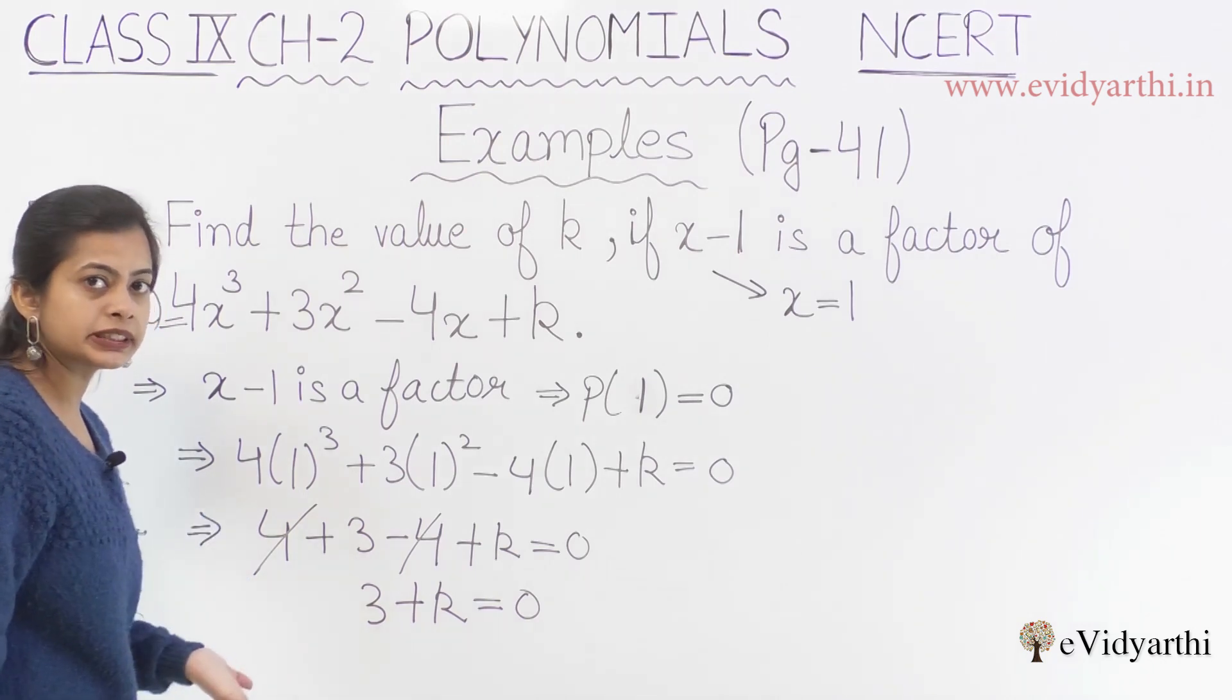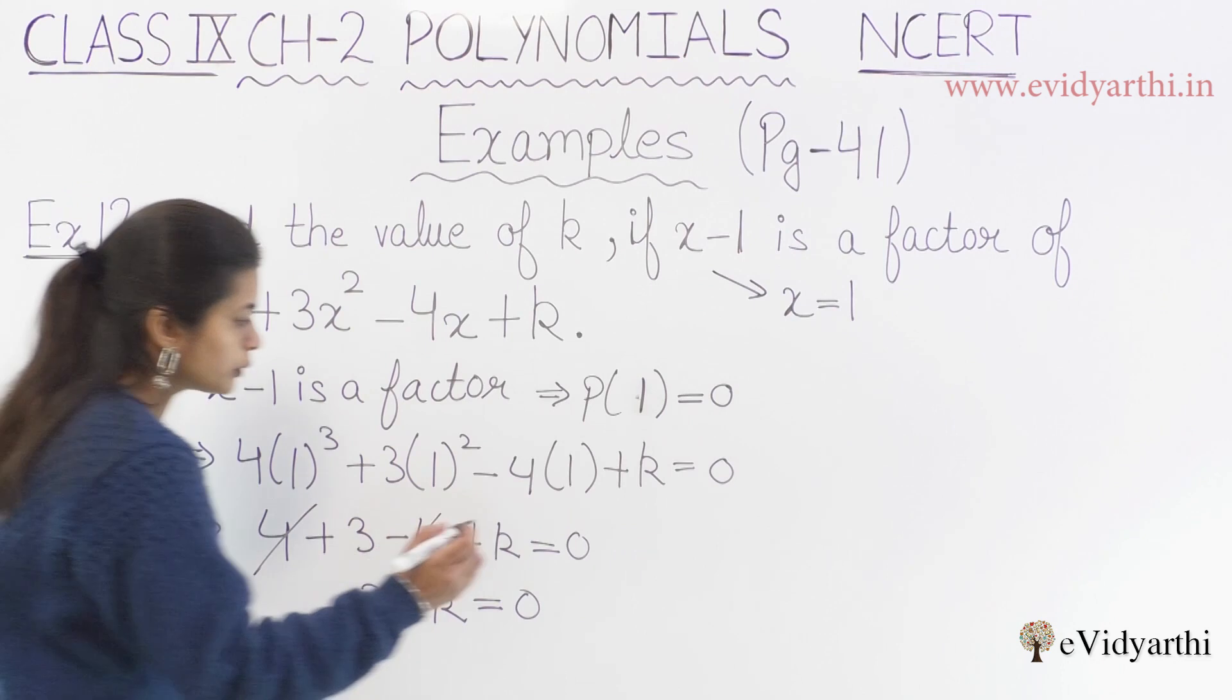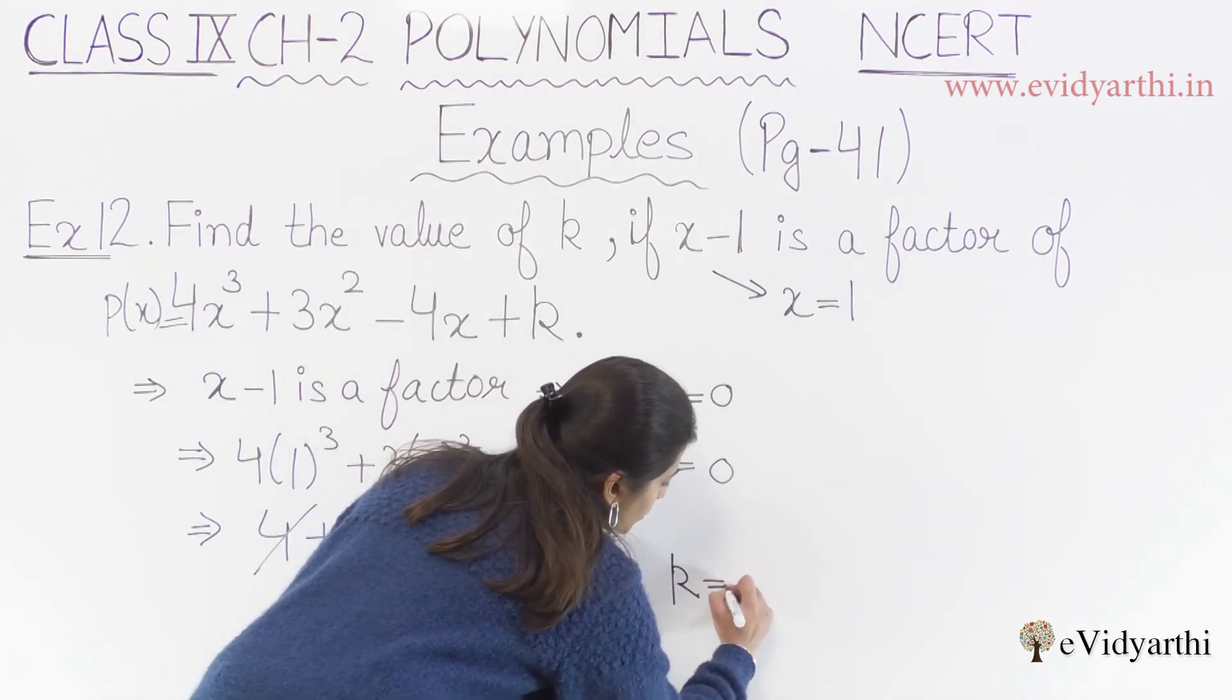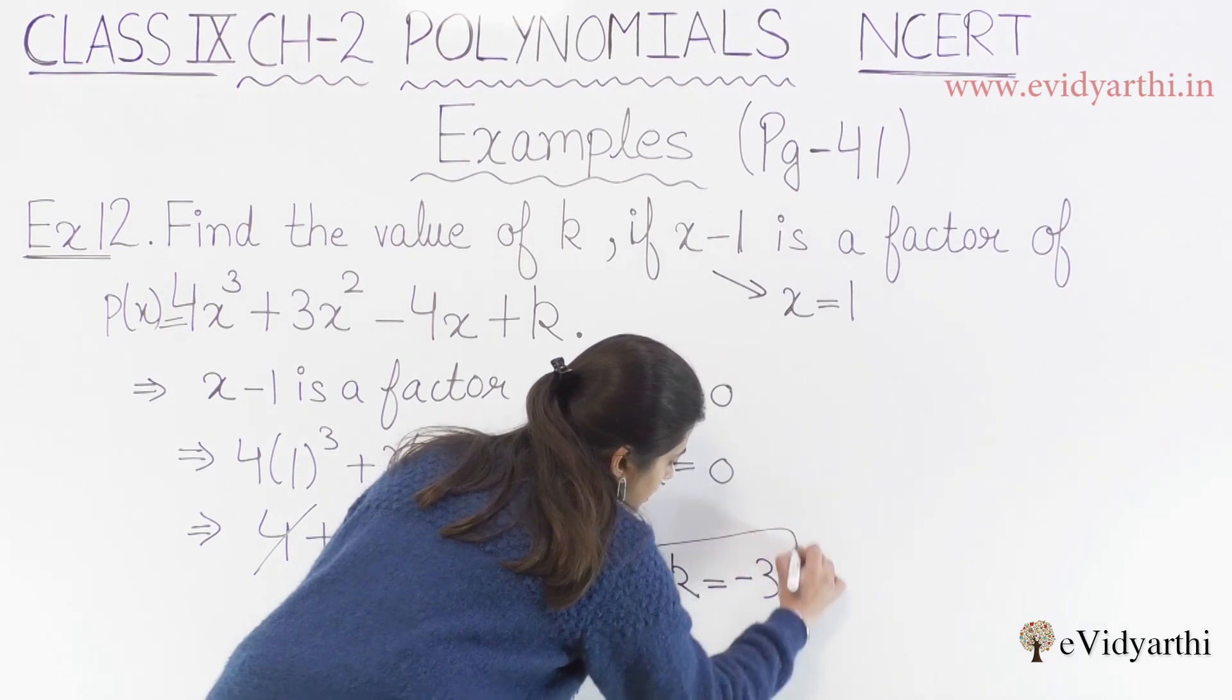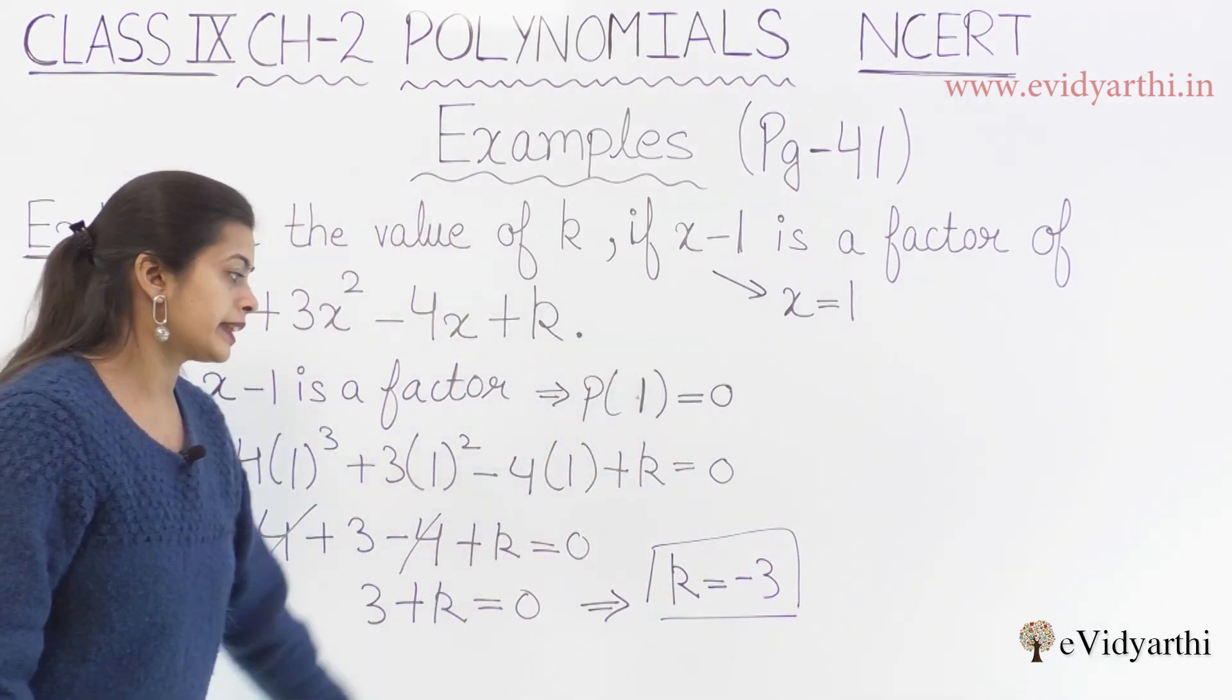If we take k to the other side, k would be equal to minus 3. So here we got the k value, minus 3.